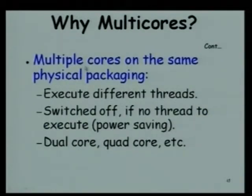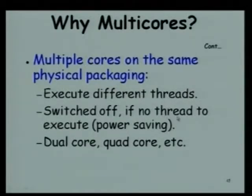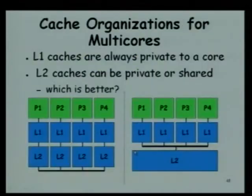The multiple cores are in the same physical packaging, each core executes different threads, and the advantage is that a core would be automatically switched off if no thread is there to execute - because power dissipation is a major problem - it can reduce power dissipation. Later on, we will look at multi-core processors.